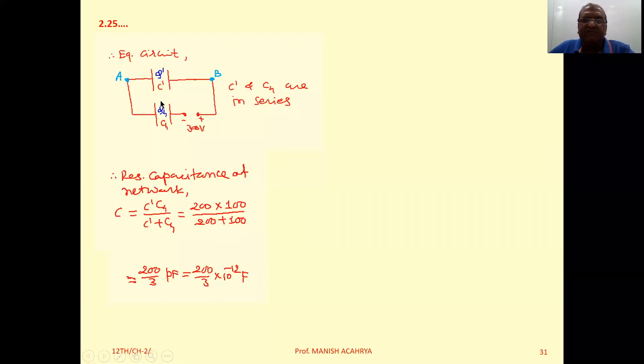For this equivalent circuit in which C' and C4 are in series, the resultant capacitance of entire network C equals C'*C4/(C'+C4), that is equal to 200*100/(200+100). You will get the answer 200/3 picofarad.